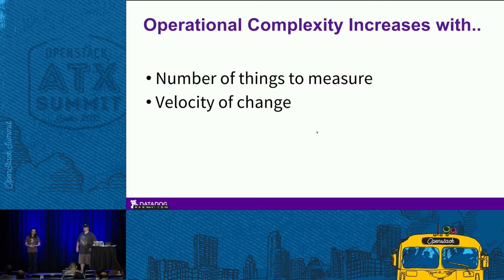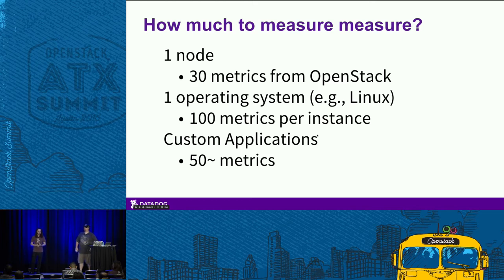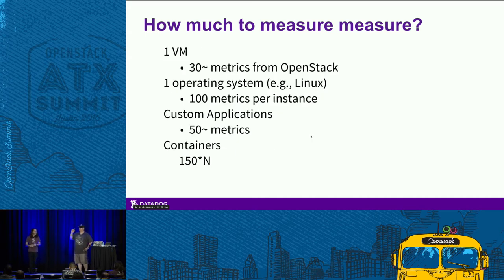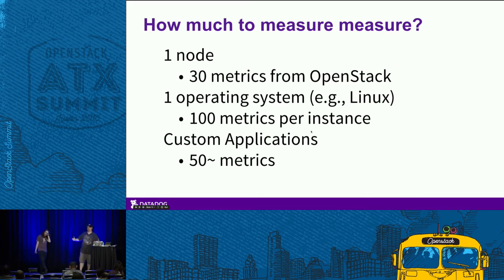Let's talk about operational complexity in cloud environments — we define that as the number of things you want to measure and the velocity at which things are changing. On average, folks are collecting about 30 metrics per node or instance from OpenStack, about 100 metrics from the operating system, and about 50 metrics from custom applications like Redis or MySQL. And that 30 metrics is just monitoring pure OpenStack. Once you add SolidFire — another 50 metrics — and Contrail — another 50 metrics — it grows a lot beyond just monitoring OpenStack itself, mostly speaking about Nova.